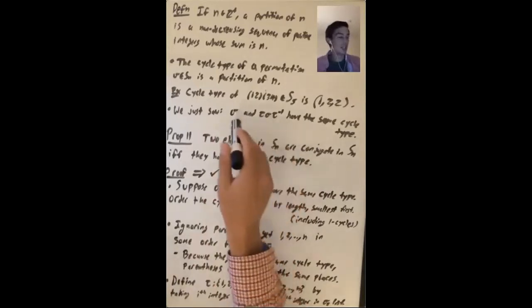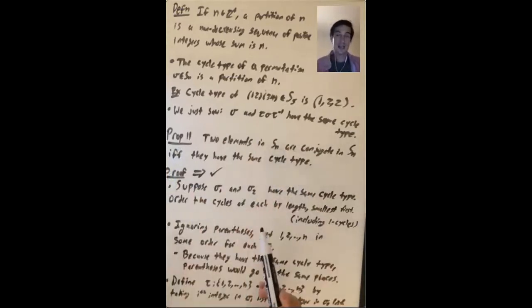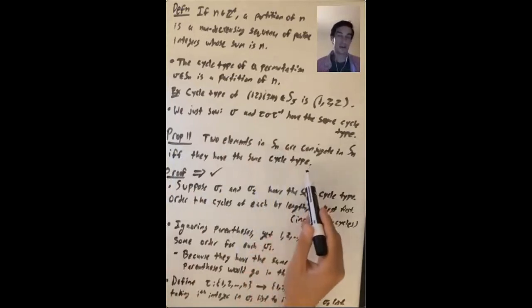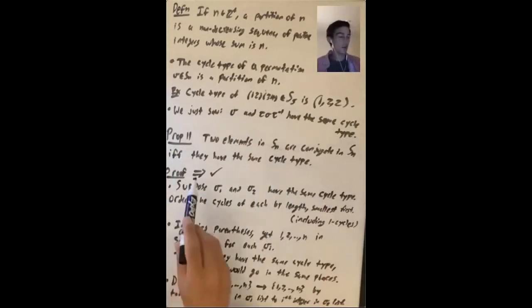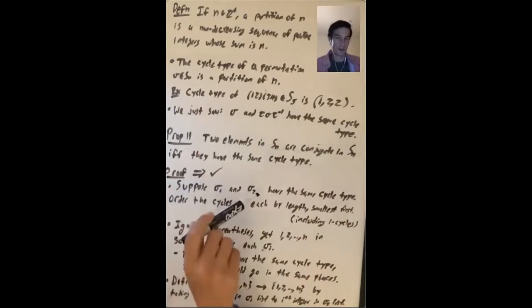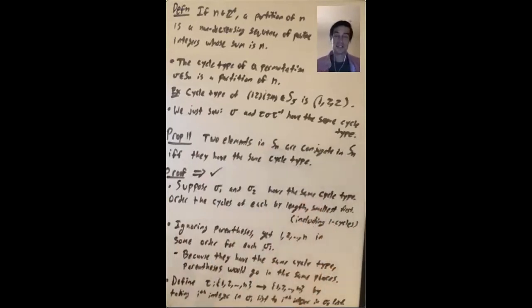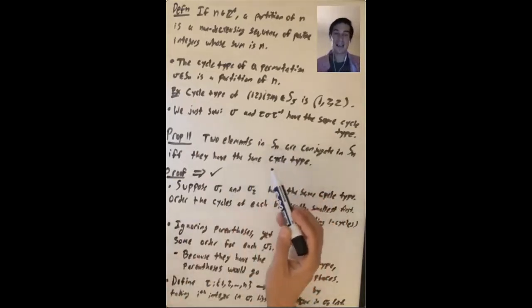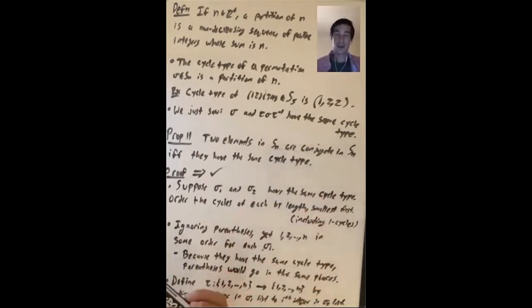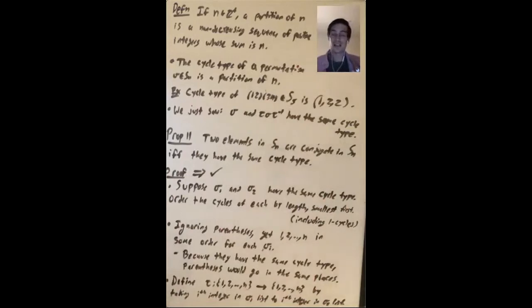We've seen conjugate elements have the same cycle type. The next thing we'll prove is the converse: two elements in Sₙ are conjugate in Sₙ if and only if they have the same cycle type. A consequence is that conjugacy classes in Sₙ are determined by cycle type.